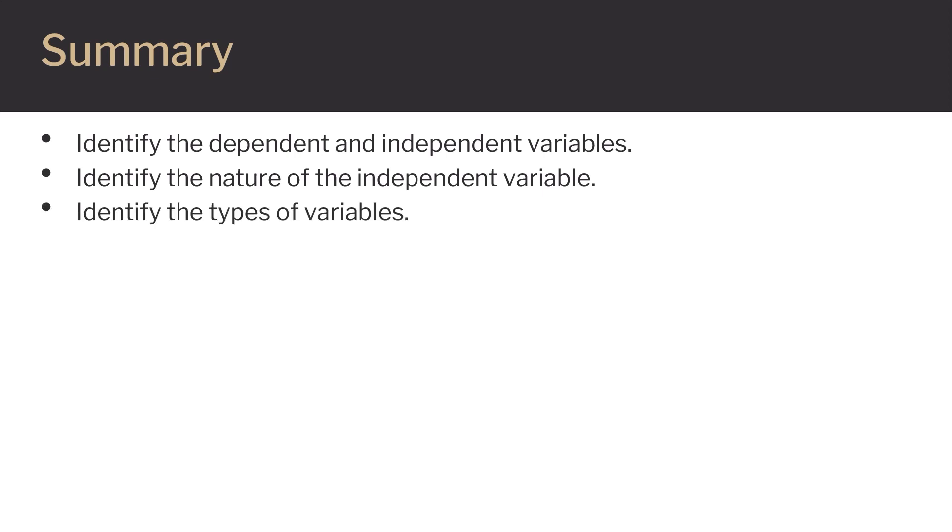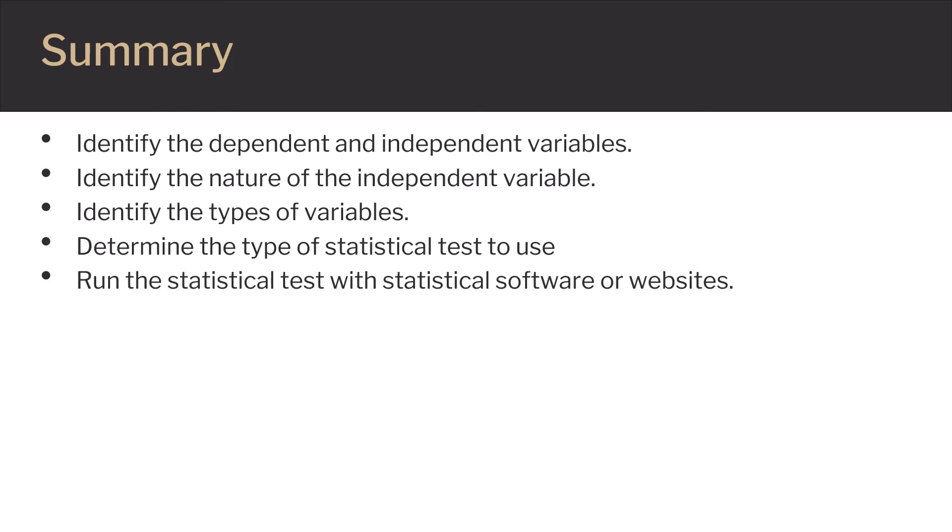In this seminar, we learned how to identify which variables of the study are dependent and independent, the nature of the independent variable, and the types of variables such as continuous variables and categorical. After identifying the nature and types of variables, the most appropriate statistical test was identified and run through statistical software or a statistical online calculator. Lastly, we covered how to research how to interpret the statistical output, discuss the results, and draw conclusions based on your analysis.